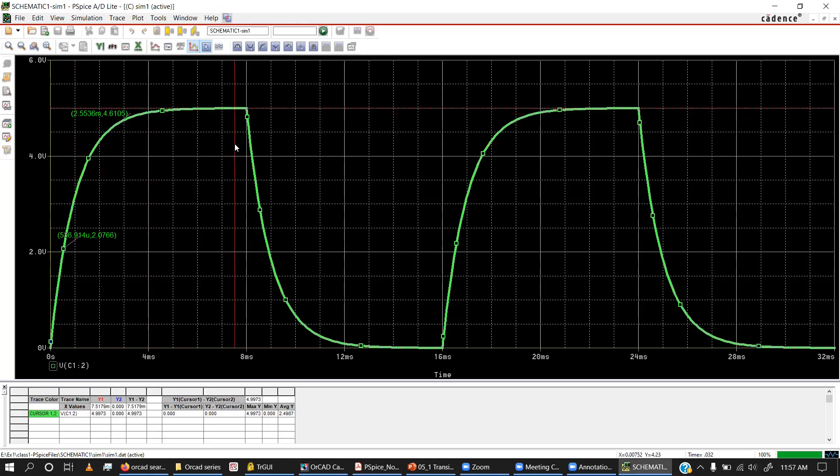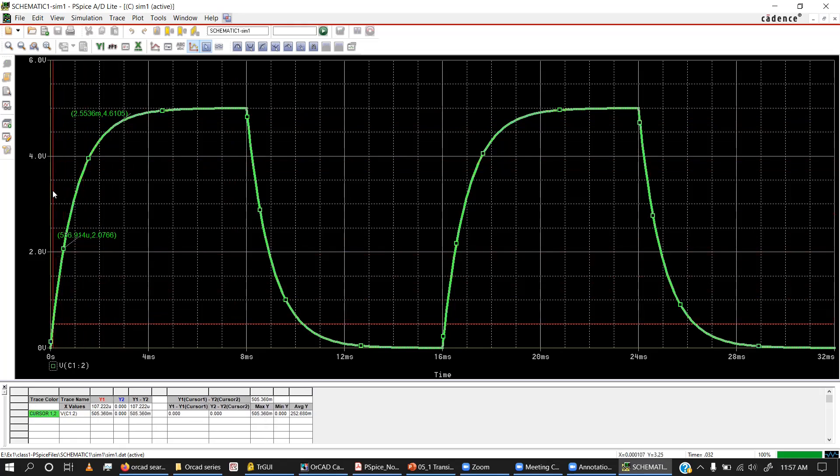From the cursors you can move it here and there. Let's see what's the topmost value. From here you can read the value, it's 4.9973, so we can assume that's 5 volts. If it's 5 volts, one-third of 5 volts is 1.67 volts. I'll move the cursor back there and move it towards the right automatically.